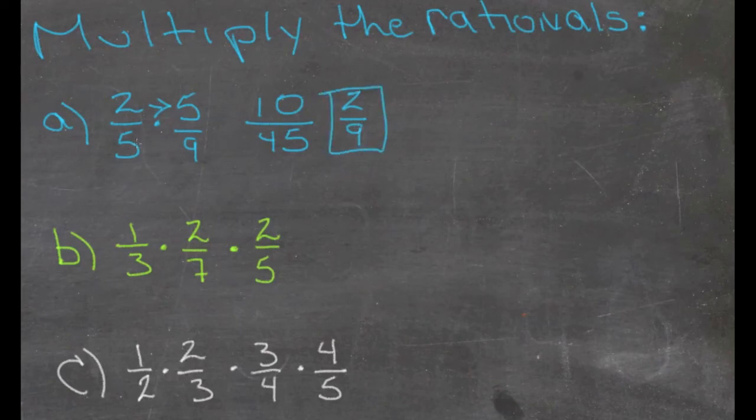Alternatively, we could look at the beginning problem, see that there's a 5 on the top and a 5 on the bottom, cancel them both. All we'd be left with is 2 on this side and 9 on this side, and you can see that that gives us the same 2/9.